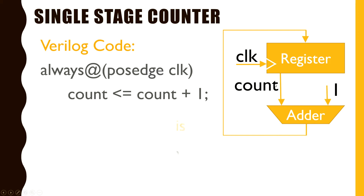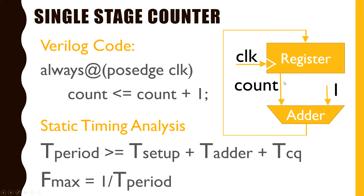As per static timing analysis, the time period of the given circuit will be greater than or equal to t_setup of the flip-flop used inside the register, plus delay of the adder (t_adder), plus t_cq, the propagation delay of the flip-flops inside the register. t_setup and t_cq are parameters of the flip-flops which remain fixed for a particular technology or process. The only variable parameter is t_adder. As counter width increases, adder width increases accordingly, significantly increasing adder delay. As t_adder increases, t_period increases and f_max (maximum operating frequency) reduces significantly.